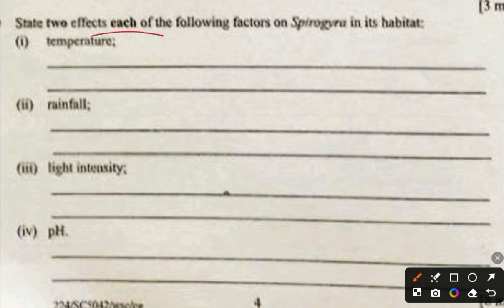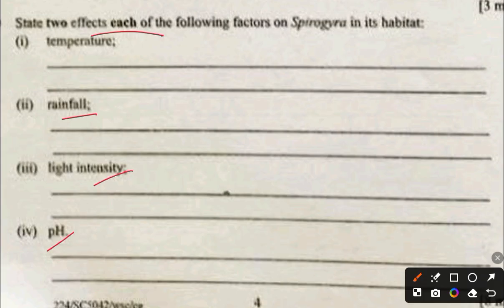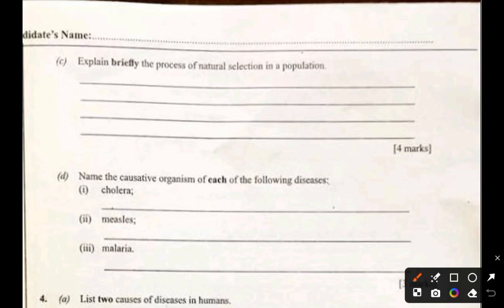Effects of factors on Spirogyra in its habitat: high temperature increases the rate of photosynthesis, but extremely high temperature causes enzyme denaturation leading to reduced growth. Increased rainfall provides more water essential for survival and growth, but excess rainfall can dilute the habitat and reduce concentration. Higher light intensity boosts photosynthesis, while low light intensity reduces energy production and slows down growth.